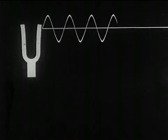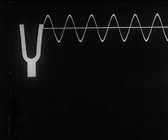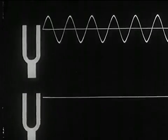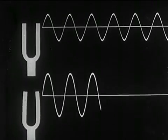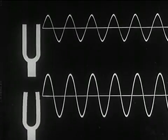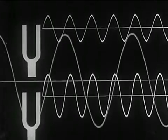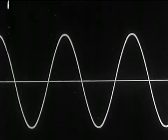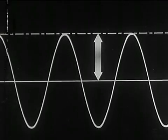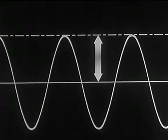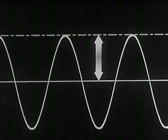We begin with loudness. Every sound sets up a disturbance in the transmitting medium. The larger the disturbance or displacement of the individual particles, the greater is the height of its graph above the neutral line. This displacement above the neutral line is called amplitude, and it is amplitude that determines loudness. As the amplitude increases, its loudness increases.